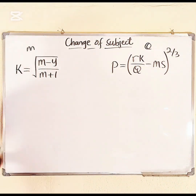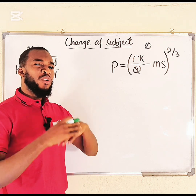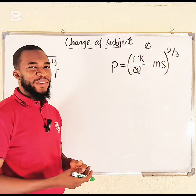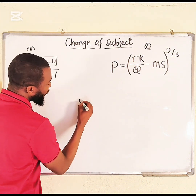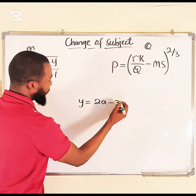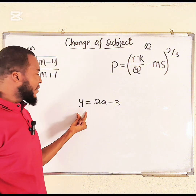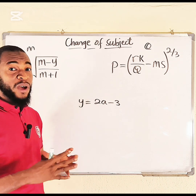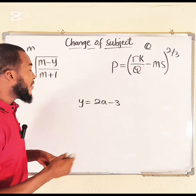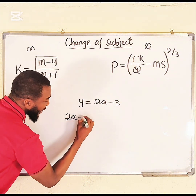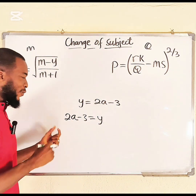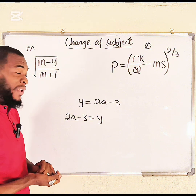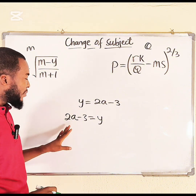Whenever you wish to make any variable the subject, you have to take away all terms connected to that variable, starting with the ones that are farther away from it. For example, suppose we have y = 2a − 3. If asked to make a the subject, go to the side where a appears and rewrite it as 2a − 3 = y, so what you want to make the subject is already on the left-hand side — that is the standard way.